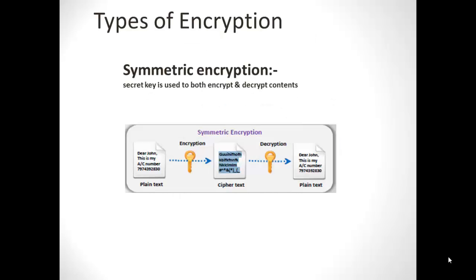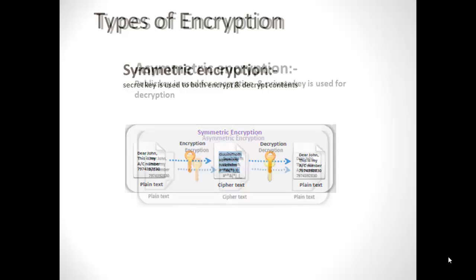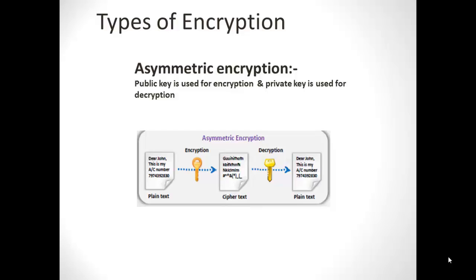Now let's look at some types of encryption. The first type is symmetric encryption, in which a single secret key is used for both encrypting and decrypting contents. This is best suitable for database and disk storage where only one endpoint is involved. The second type is asymmetric encryption, which is more secure because it involves two endpoints — the sender and the receiver.